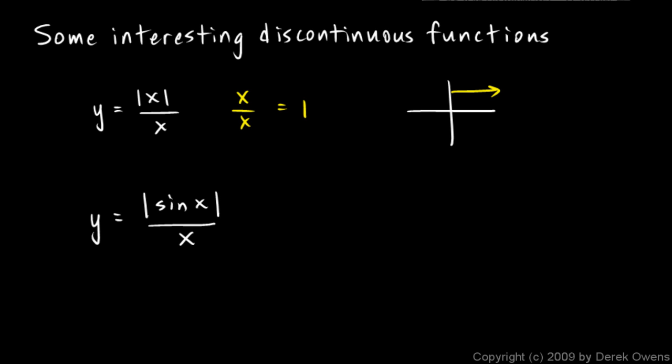But when x is negative, the absolute value up here, the numerator, is still positive because of the absolute value sign. But the denominator is negative. So when x is negative, we have a positive number divided by a negative number. So it's negative 1.